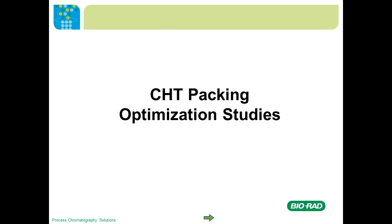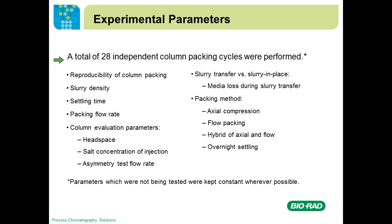I want to talk about some optimization studies we've done on CHT to see what affects column performance in terms of HETP and asymmetry. We did about 28 independent packing cycles and varied numerous conditions one at a time — keeping everything the same in the baseline case to assess reproducibility, then varying additional items and checking asymmetry and HETP to see what effect, if any, they would have.